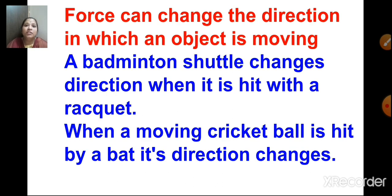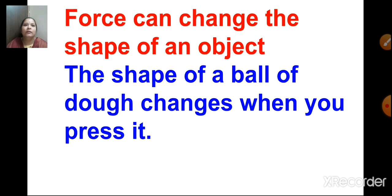Force can change the direction in which an object is moving. By hitting something that is already moving, we can change its direction — a badminton shuttle changes direction when hit with a racket, and a moving cricket ball changes direction when hit by a bat. Force can also change the shape of an object, such as when you press a ball of dough.